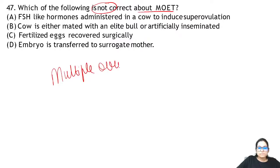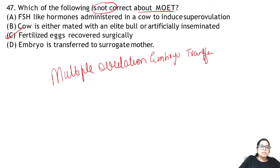Question 47: which of the following is not correct about MOET — multiple ovulation embryo transfer? The fertilised eggs are recovered non-surgically — this is stated incorrectly, so that option is wrong.